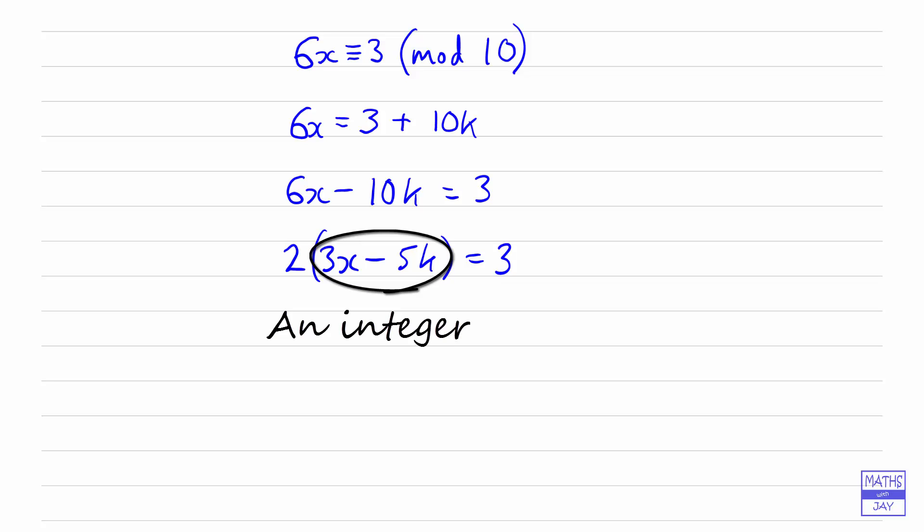So we've got 2 times a whole number is equal to 3, which is impossible. Because 3 isn't an even number, this cannot be.